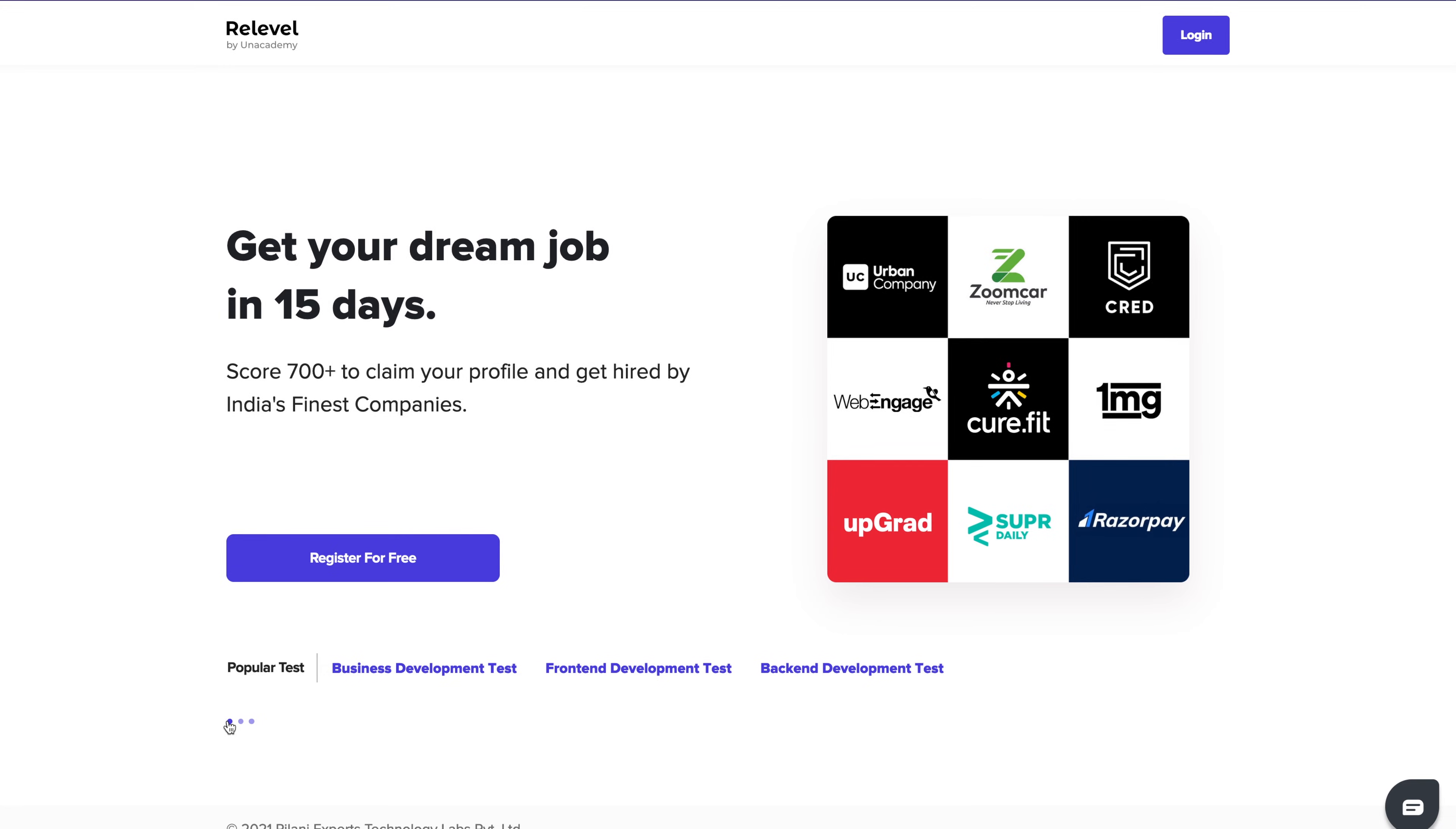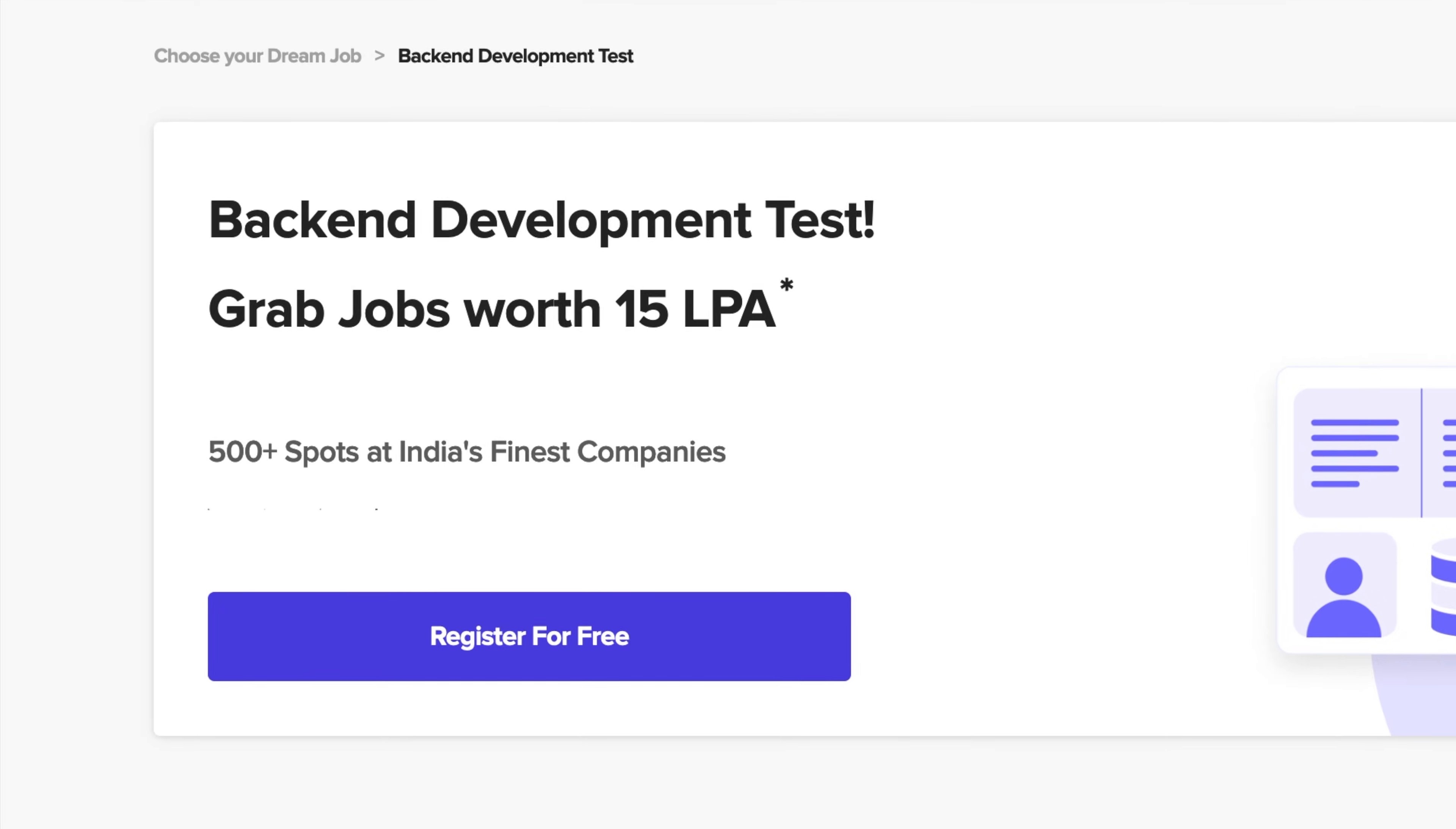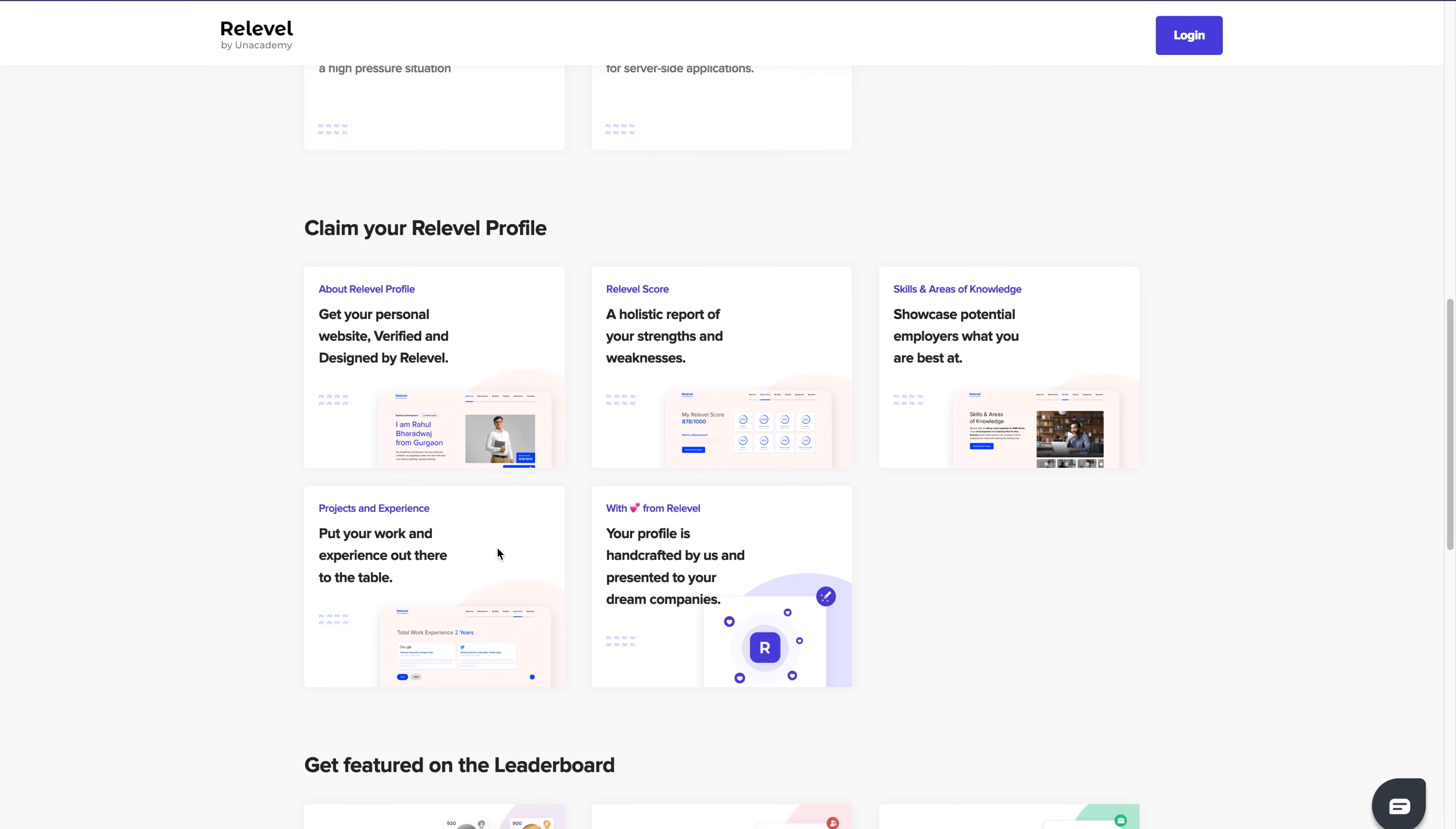Before starting this video, I'd love to thank Relable for sponsoring this entire tree series. Do you wish to work with companies like Cred, Upgrad, Urban Company, Razorpay, but you're not able to apply because of your lack of experience and opportunities? Here's the solution to this problem. Relable by Unacademy is a hiring platform that helps freshers and experienced people to get jobs in India's top companies. All you need is skills.